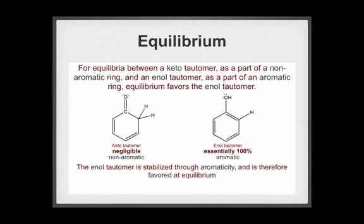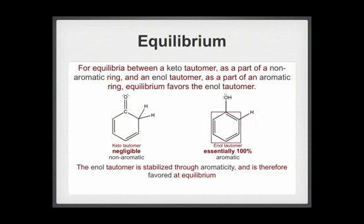For equilibrium between a keto tautomer as a part of a non-aromatic ring and an enol tautomer as a part of an aromatic ring, equilibrium favors the enol tautomer. The enol tautomer is stabilized through aromaticity and is therefore favored at equilibrium.